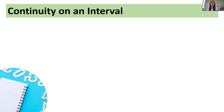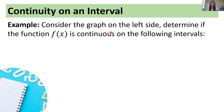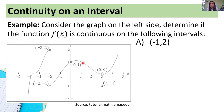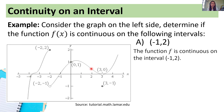Let's now discuss continuity on an interval. Consider the graph shown. Determine if f of x is continuous on the following intervals. For the first interval — the open interval from negative 1 to 2 — since parentheses are used, all values strictly between negative 1 and 2 are considered, but not the endpoints. Tracing the graph, there is no hole, jump, or gap. Therefore, the function f is continuous on the open interval negative 1 to 2.